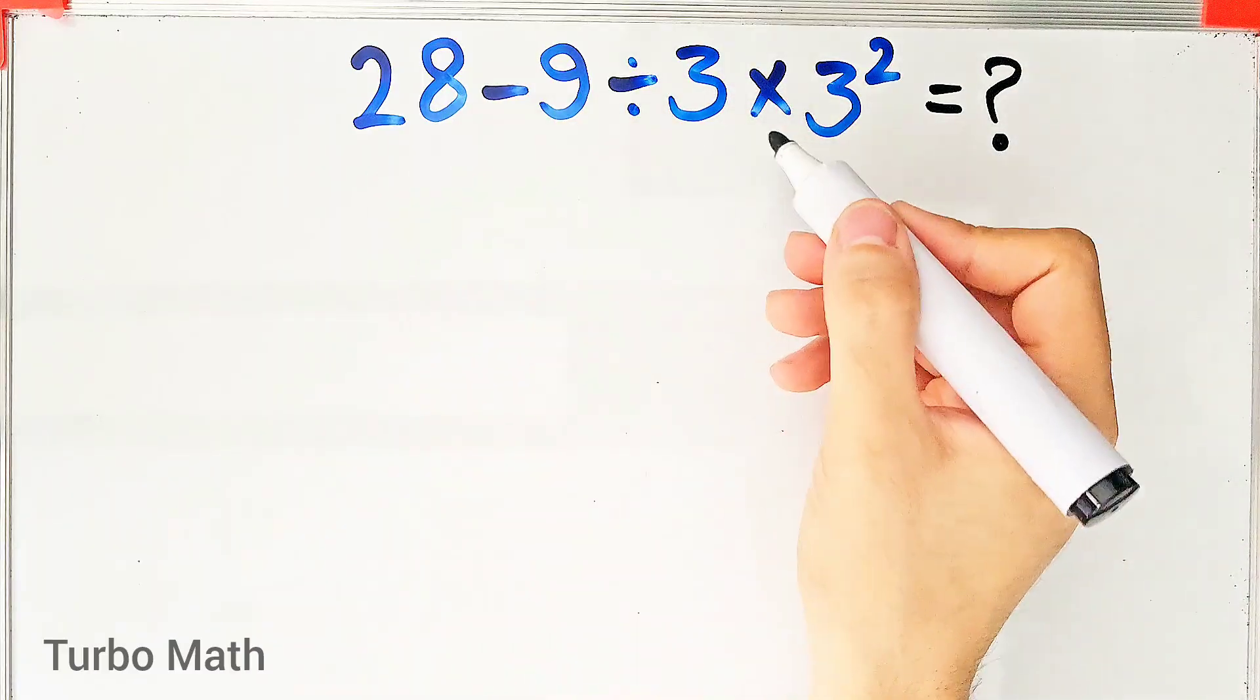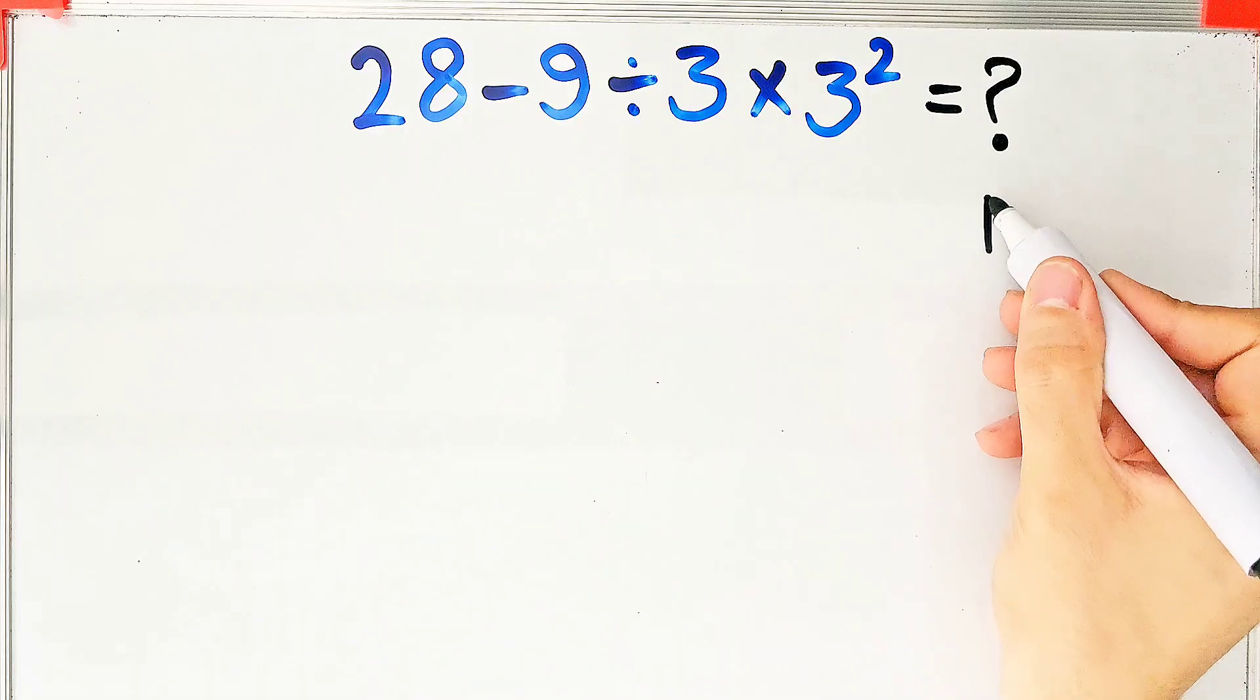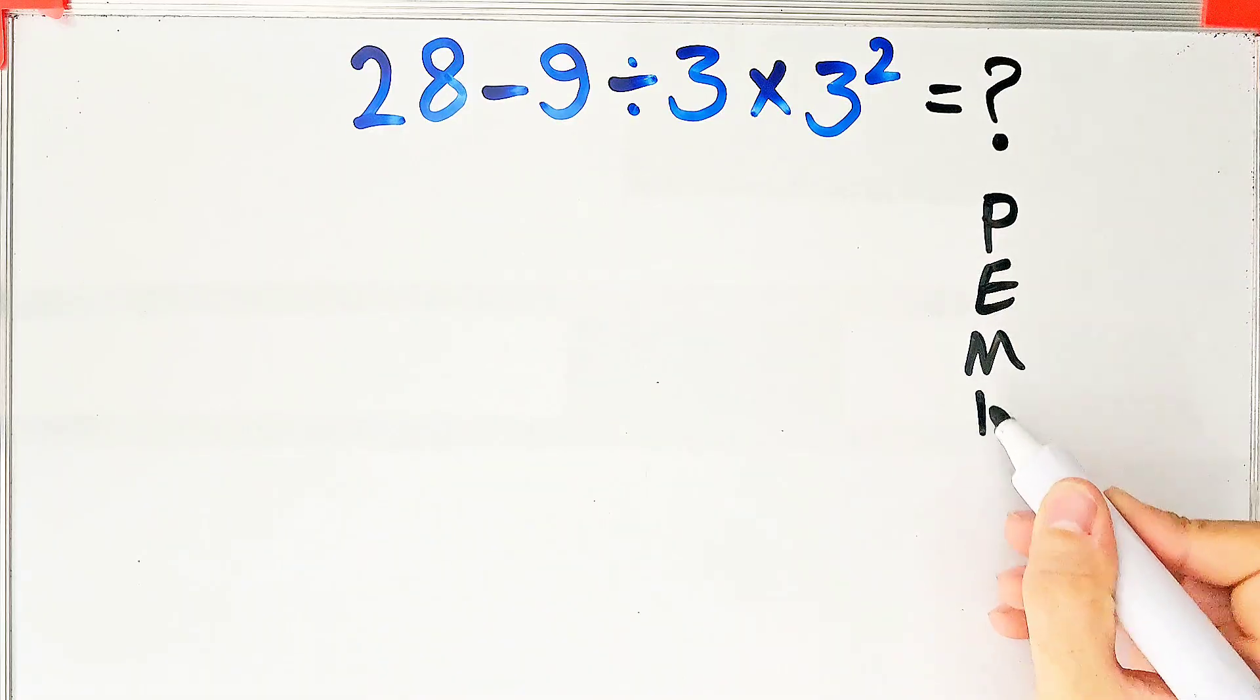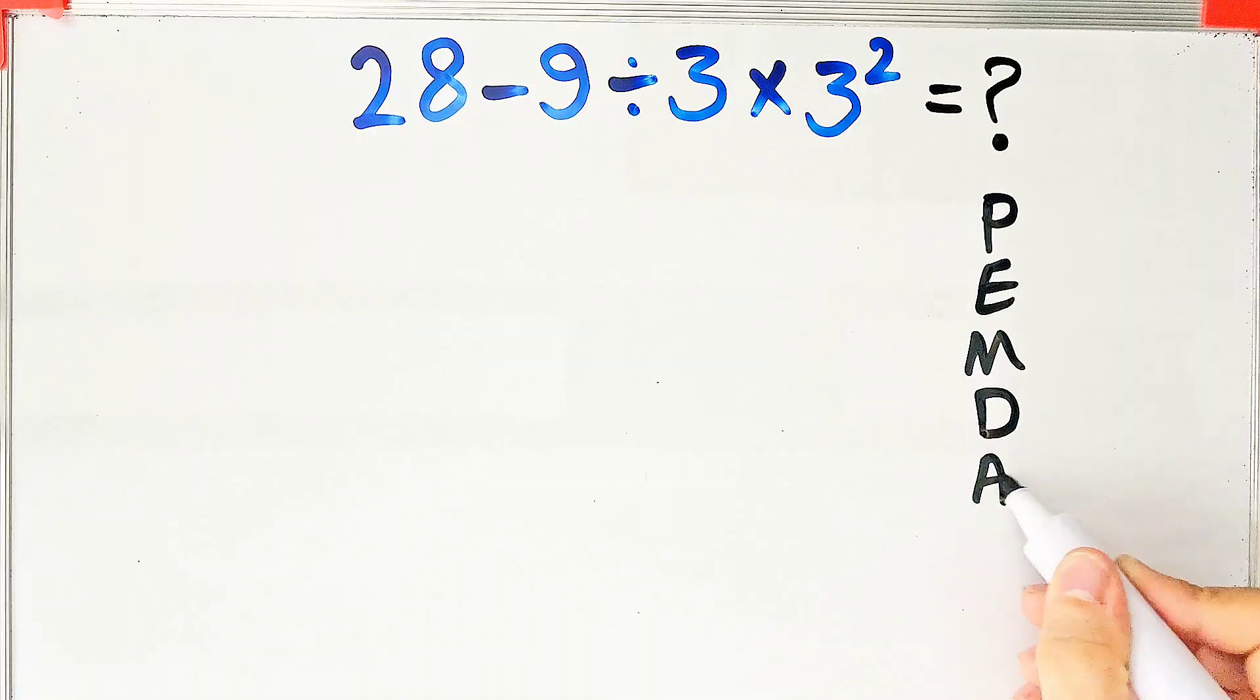To solve this question, we need to follow the PEMDAS rule. PEMDAS shows the priority of the mathematical operations. If you don't pay attention to this rule, you get the wrong answer.